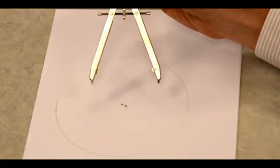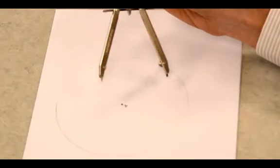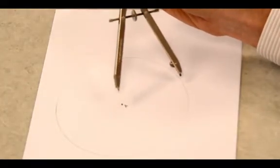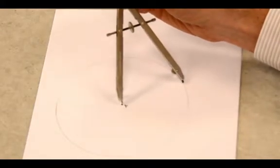So this compass is used for drawing circles or making arcs, which are pieces of circles, and you can use that for measuring distances.